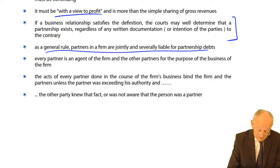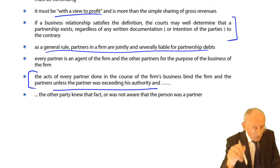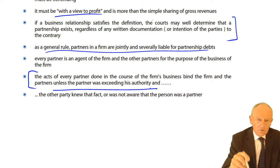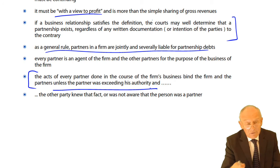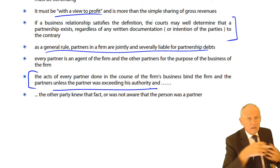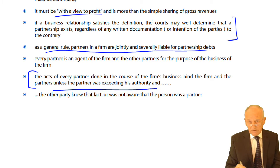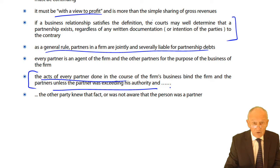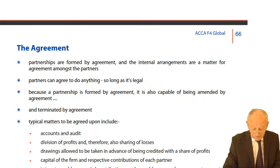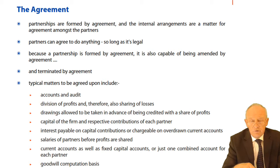The acts of every partner done in the course of the firm's business bind the firm and the partners, unless the partner is exceeding their authority. Even if a partner exceeds their authority, you're still liable — because if the other party didn't know of that excess, you're liable. But if the other party did know, then only that contracting partner is liable. Or, if I enter a contract and the other party doesn't know that you and I are in partnership and I exceed my authority, then you can escape liability.